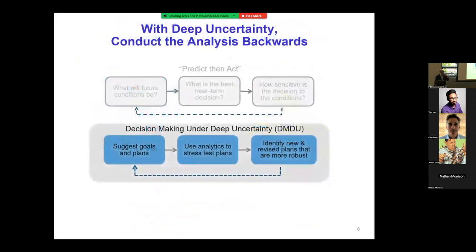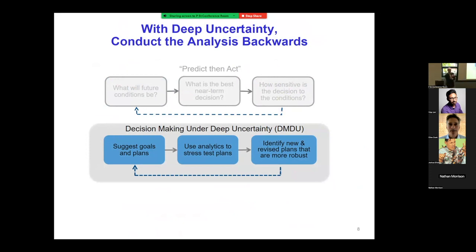The way you solve wicked problems involves an iterative reframing leading to clumsy solutions — bits of clay from different worldviews stuck together into something that is an adequate solution. Decision-making under deep uncertainty does the analysis backwards: instead of starting with consensus understanding of the future, you start with goals and plans, use analytics to stress-test the plans across different futures, and use that information to make plans more robust and resilient against uncertainty.